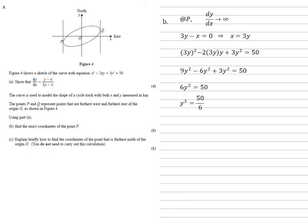y squared is 50 over 6, so y equals plus or minus 5 root 3 over 3. We already know that x equals 3y, so using that gives us x equals plus or minus 5 root 3.